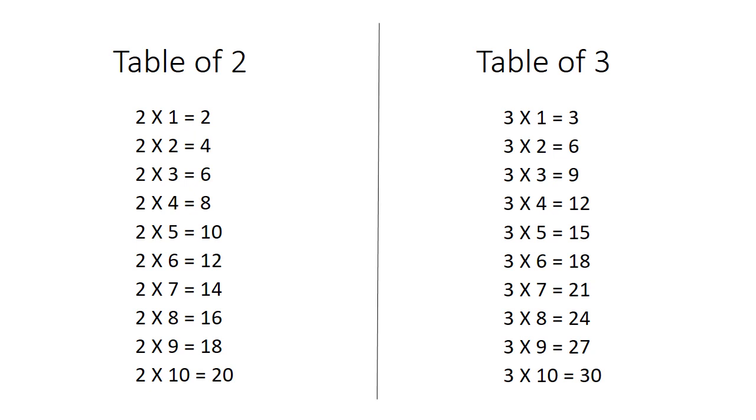Now table of 3. 3 ones are 3, 3 twos are 6, 3 threes are 9, 3 fours are 12, 3 fives are 15, 3 sixes are 18, 3 sevens are 21, 3 eights are 24, 3 nines are 27, 3 tens are 30.